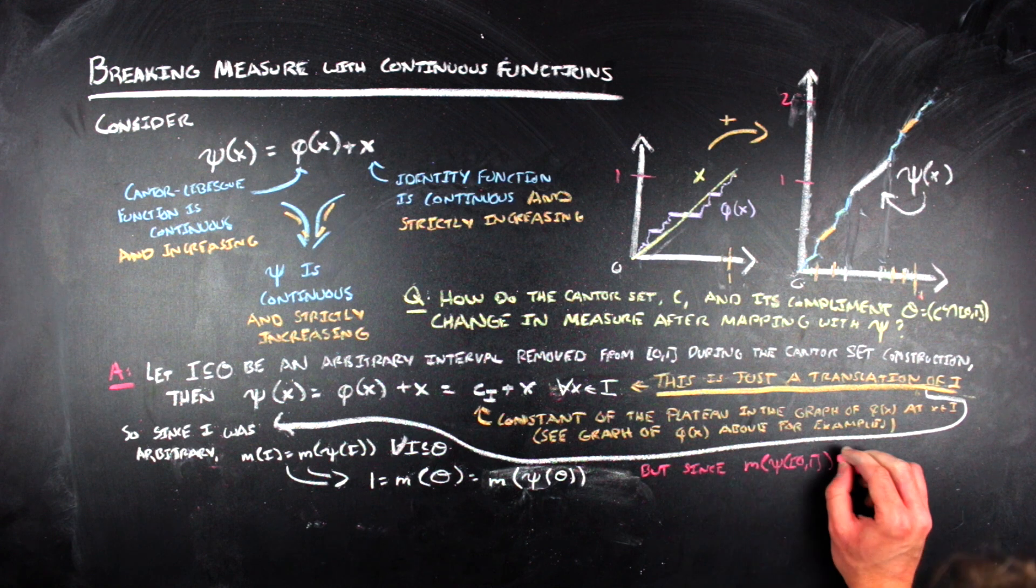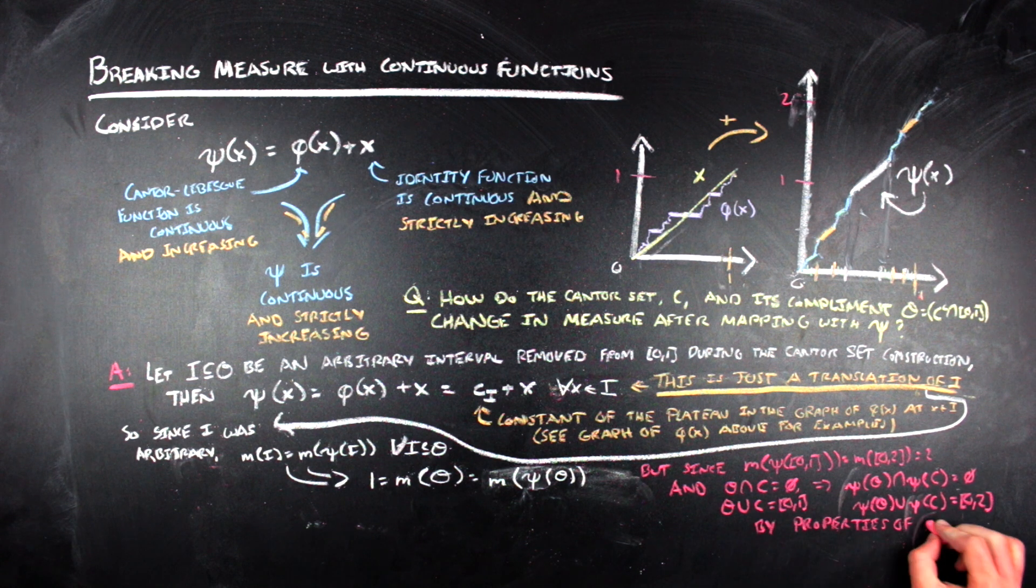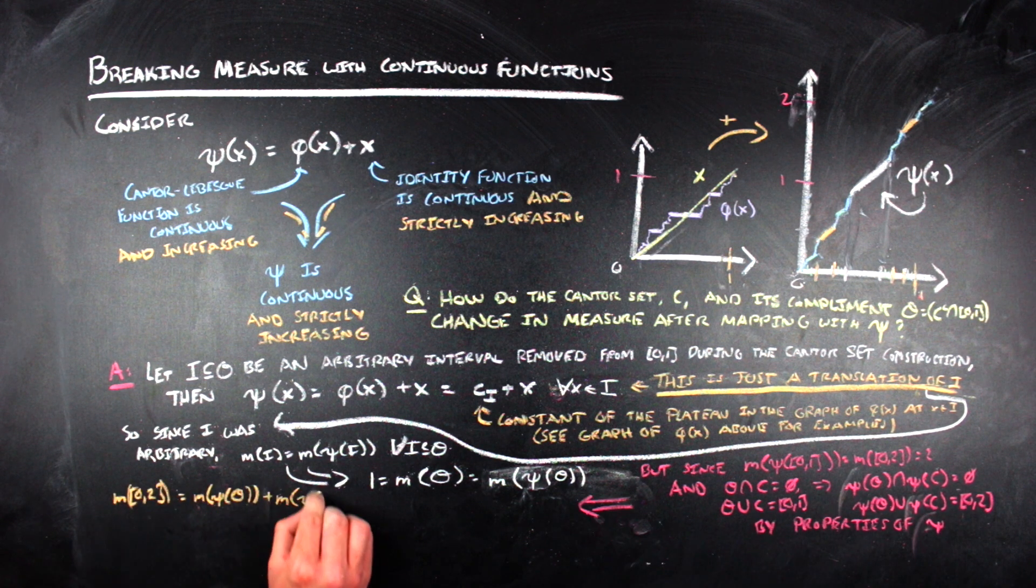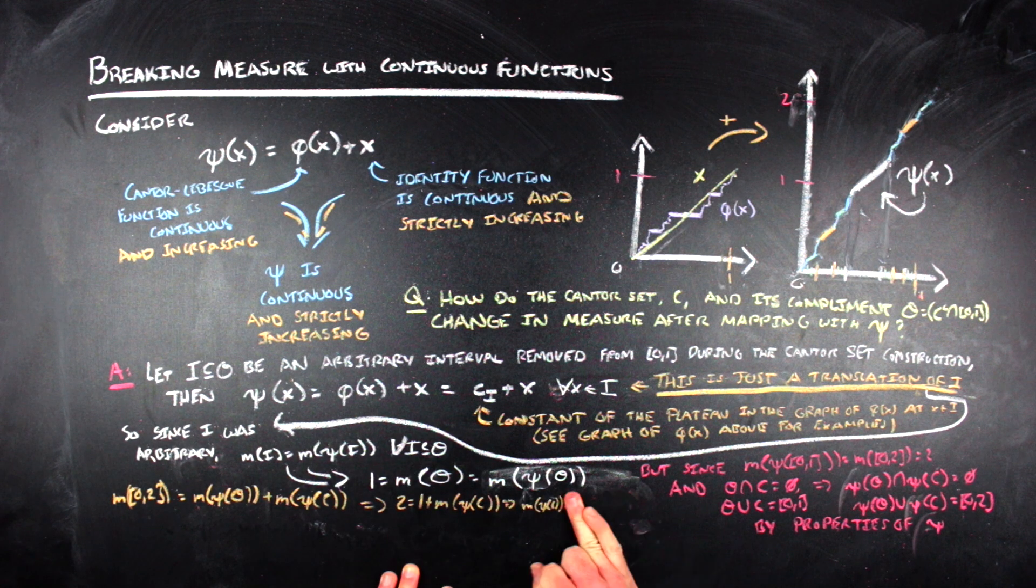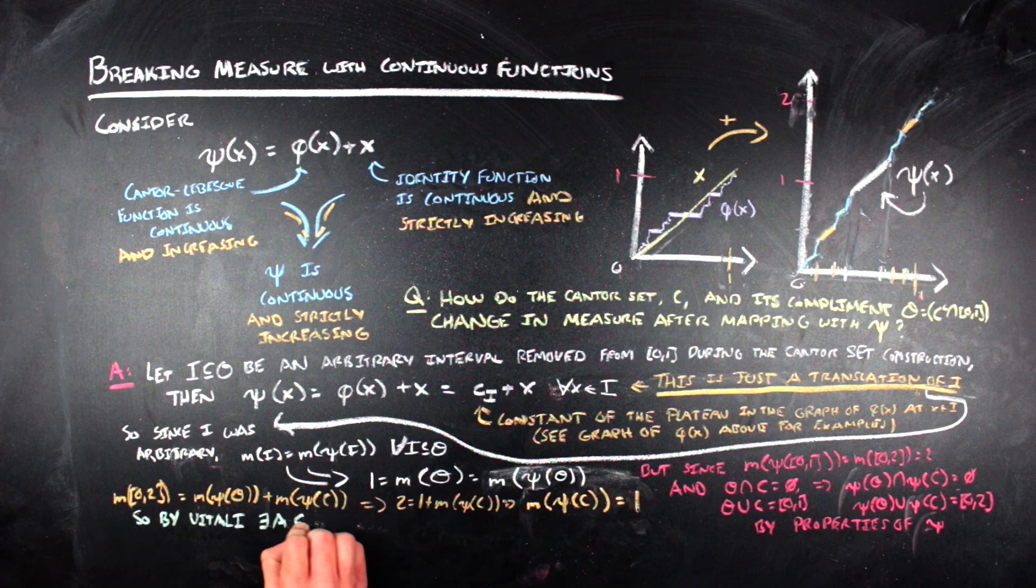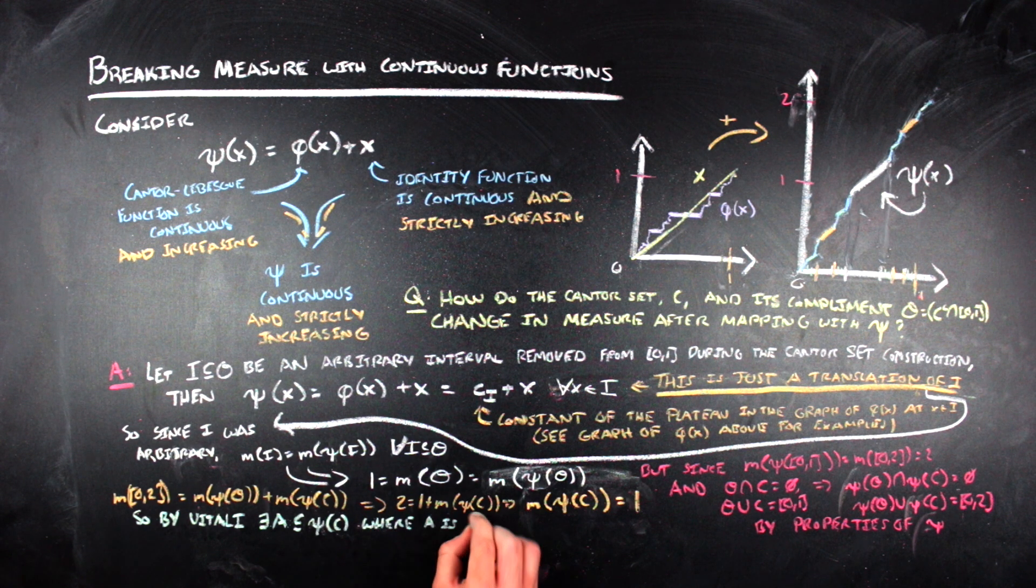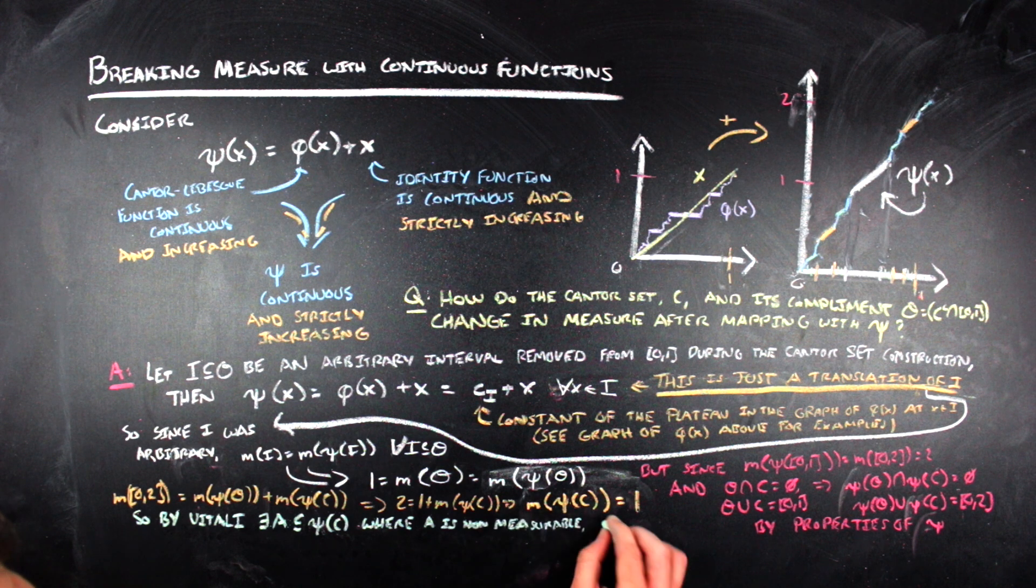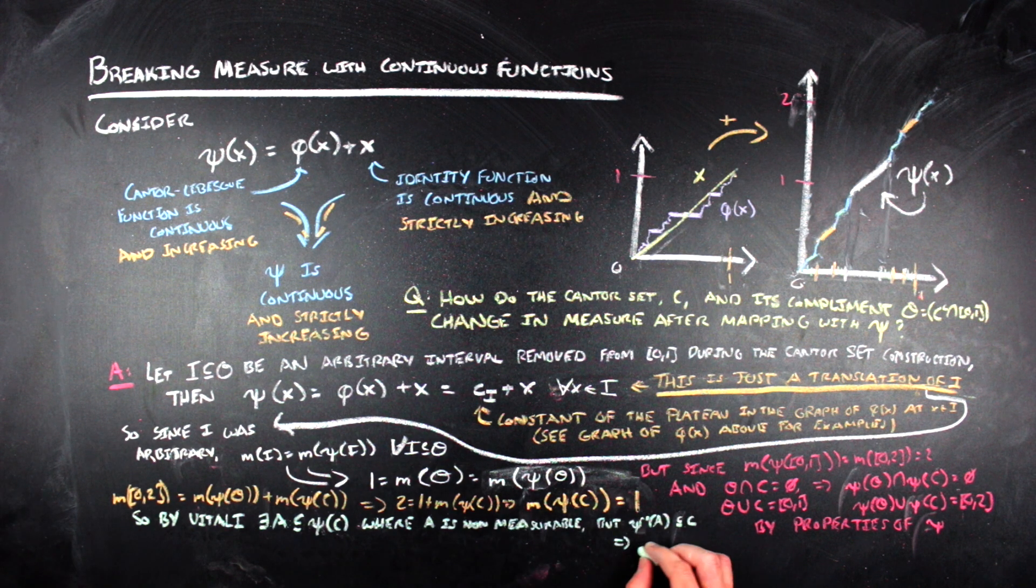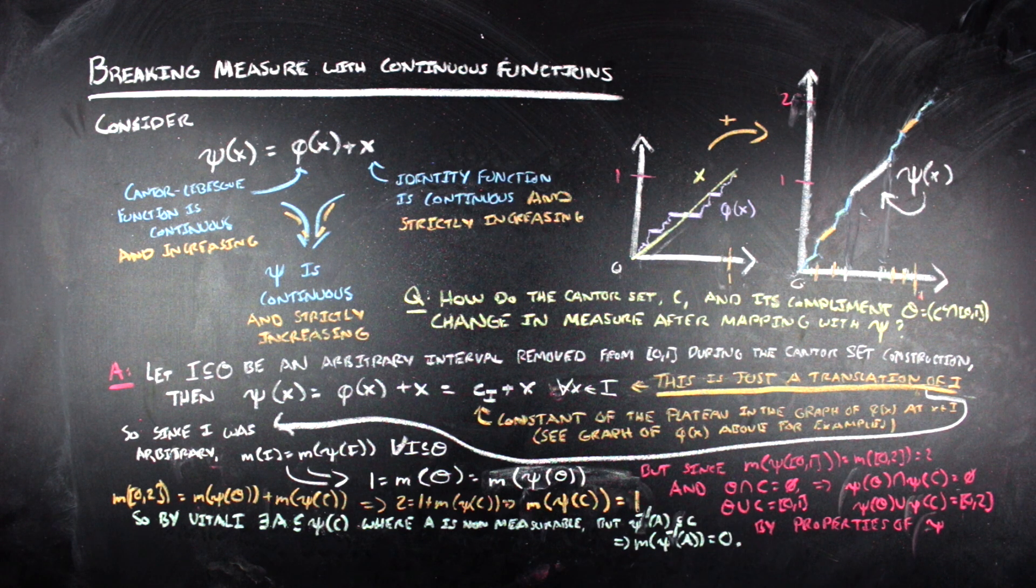However, this means that the image of the Cantor set must also have measure 1 since the image of the Cantor set's complement and the image of the Cantor set are disjoint and union together to form the entire interval from 0 to 2. Now we can finally apply what we talked about in the last video where I was at the chalkboard. In particular, by Vitali's argument, we can find a subset A of the image of the Cantor set that does not have a measure associated with it. However, the pre-image of this set has a measure. Since it is a subset of measure 0, it must also have measure 0.